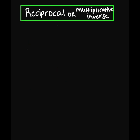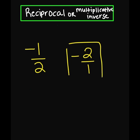What about negative 1 over 2? What's the reciprocal of negative 1 over 2? Remember, we are flipping our numerator and denominator. The reciprocal is going to be negative 2 over 1, or you might just write negative 2.